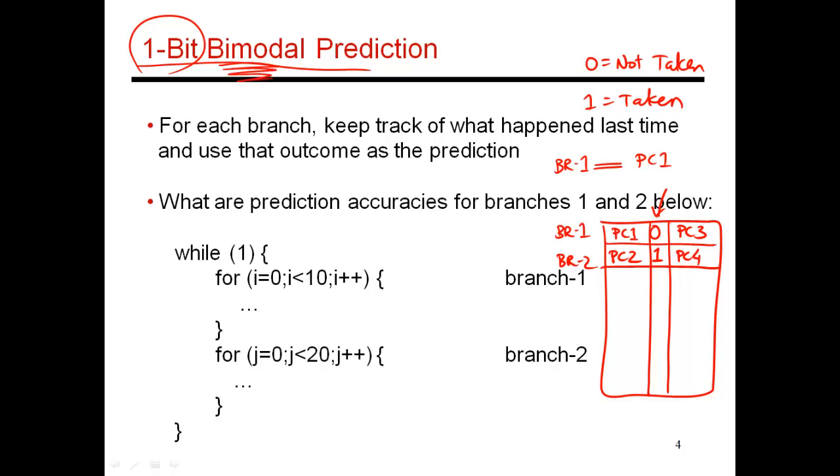And it's called bimodal because this predictor is very clear about what it's predicting. It's either saying taken or not taken. There's no gray area in between. And this gray area will be made more clear when we look at more fancy predictors. But for now, it's a bimodal predictor because it very clearly says if I should be jumping or if I should not.